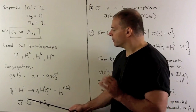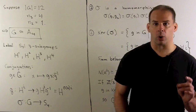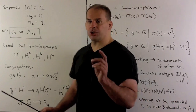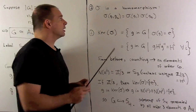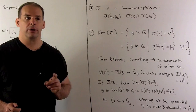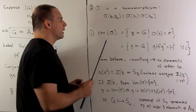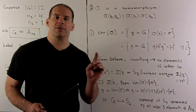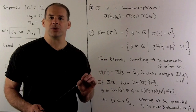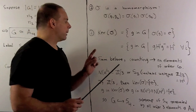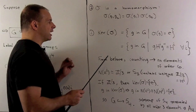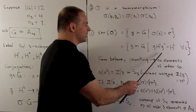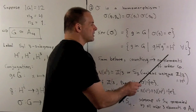That gives us a map sigma from G into S_4, the symmetric group on four letters. To get the isomorphism, we need to show a few things. First, sigma is a homomorphism — that's straightforward. Then I want to show the kernel of sigma is equal to the identity, which gives us an injective homomorphism. For the isomorphism, all we need to show is that the image is equal to A_4 in S_4. To show the kernel of sigma is the identity, suppose we have a g in the kernel — that means if I conjugate any Sylow 3-subgroup by that g, we get back the same Sylow 3-subgroup.